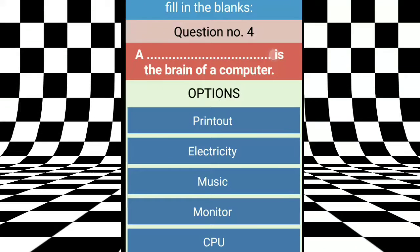Question number 4 is, a dash is the brain of computer. So, who is the brain of computer? Everyone knows? CPU is the brain of computer. Right answer.